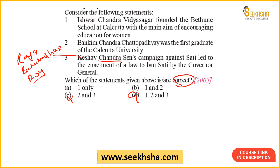Since statement three is eliminated, options containing it are gone. Now between the remaining options, statement one — that Ishwar Chandra Vidyasagar founded Bethune School — is present in both remaining options and is correct. So the entire game rests on statement two. If you know statement two as a fact, you can answer confidently; otherwise the probability is fifty-fifty and you should not guess, as there is a 50% chance of being wrong.